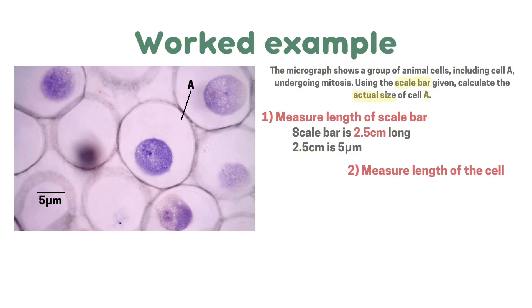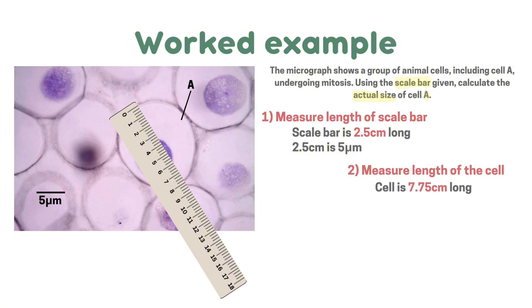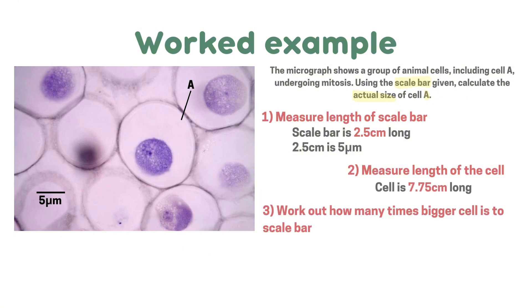When measuring the length of cells in biology questions, you always try to measure the length of the cell so that the cell is the longest it can be. Now the cell is 7.75 centimetres long. Now you work out how many times bigger the cell is to the scale bar. So we divide 7.75 centimetres by 2.5 centimetres, which equals 3.1. So now we know the cell's length is 3.1 times larger than the length of the scale bar.